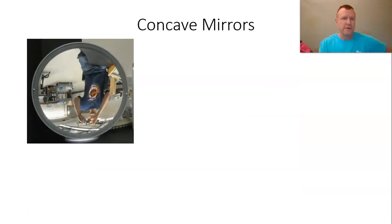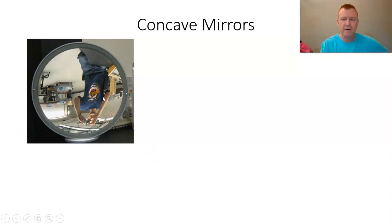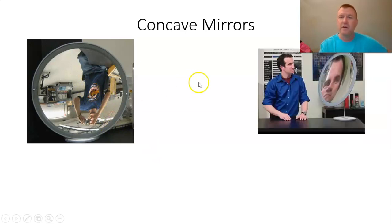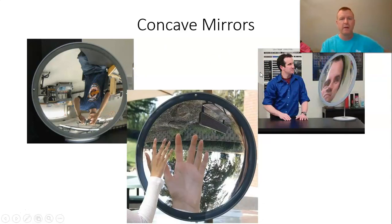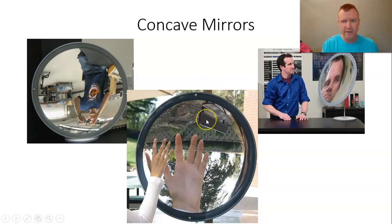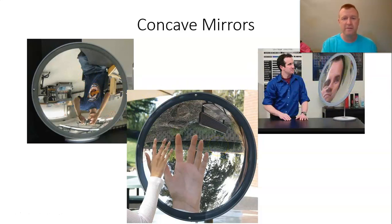Now concave mirrors — here's a concave mirror, like looking into the inside part of a spoon. You notice this guy's image is upside down. Here's another concave mirror with a different image: now the image is right side up and pretty big. And in this image, you can see both effects — the person's hand is very big and right side up, while the park bench in the background is upside down. They're all the same type of mirror; it just depends on where the object is located.